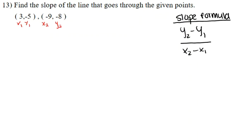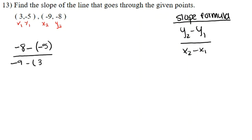For y2, we're going to have the value of negative 8 minus — and I always put parentheses just to separate it because you're subtracting the actual term of y1. In that case, we're going to have negative 5, divided by x2 which is negative 9, minus 3.